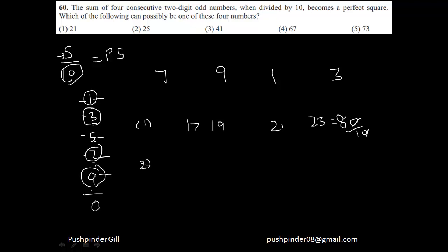Let's try the second number. But you don't even need to try it, because the second option has 5 at the end, and none of our required unit digits is 5. That means the second option is automatically eliminated. Let's try the third option.